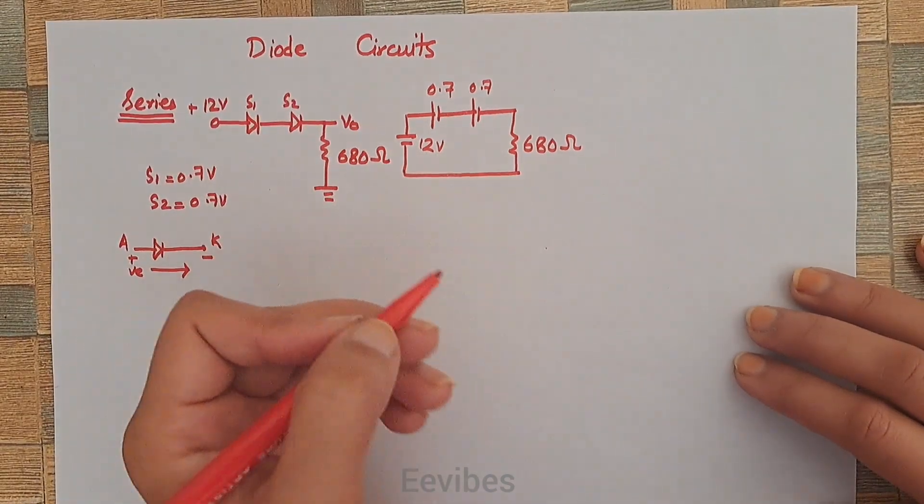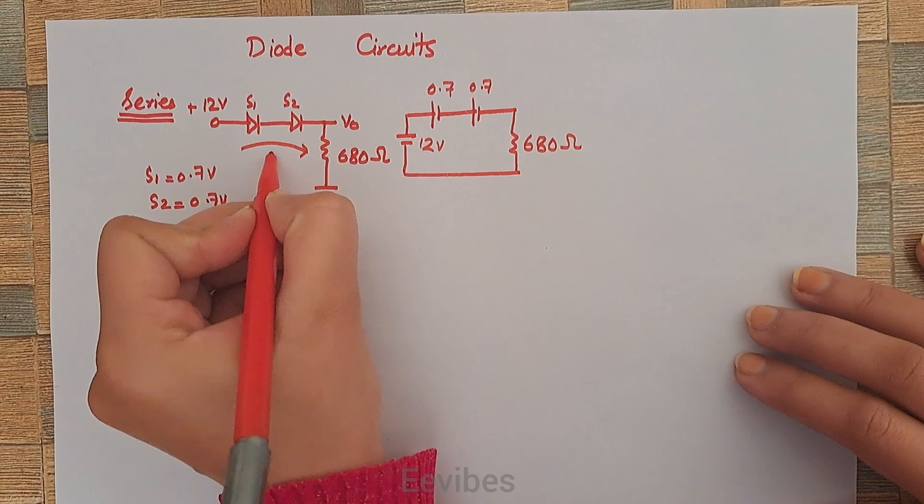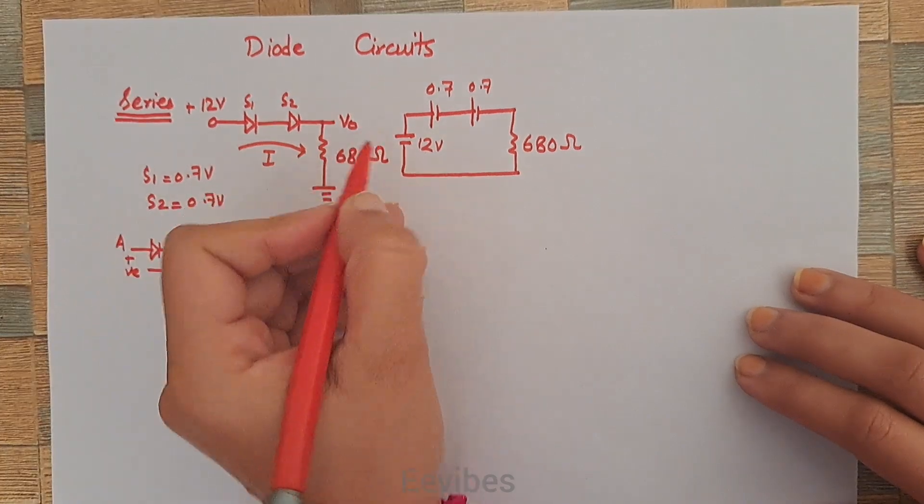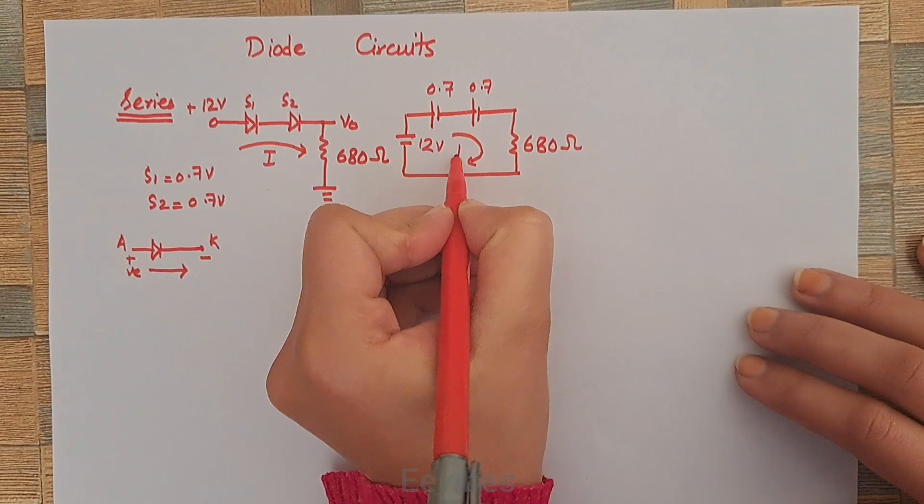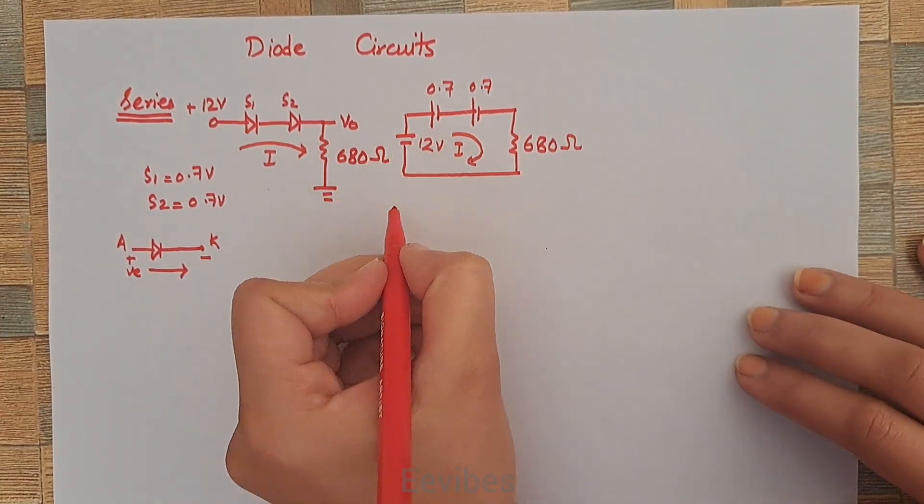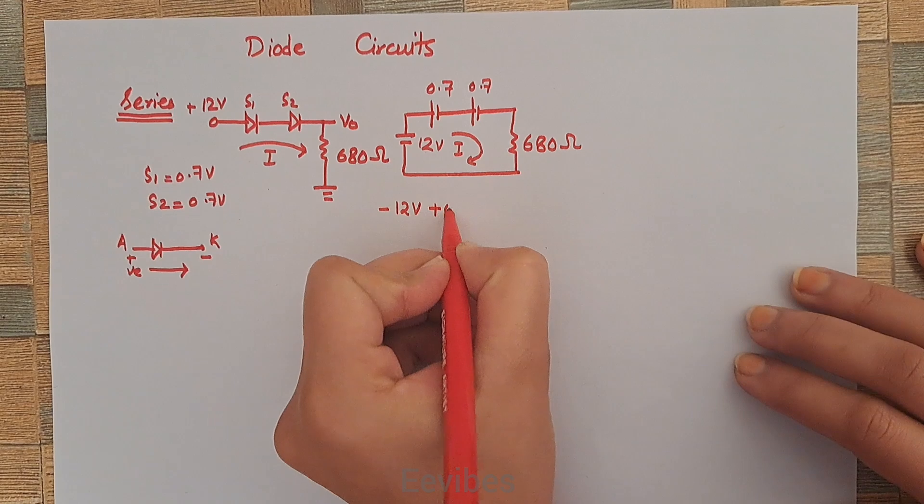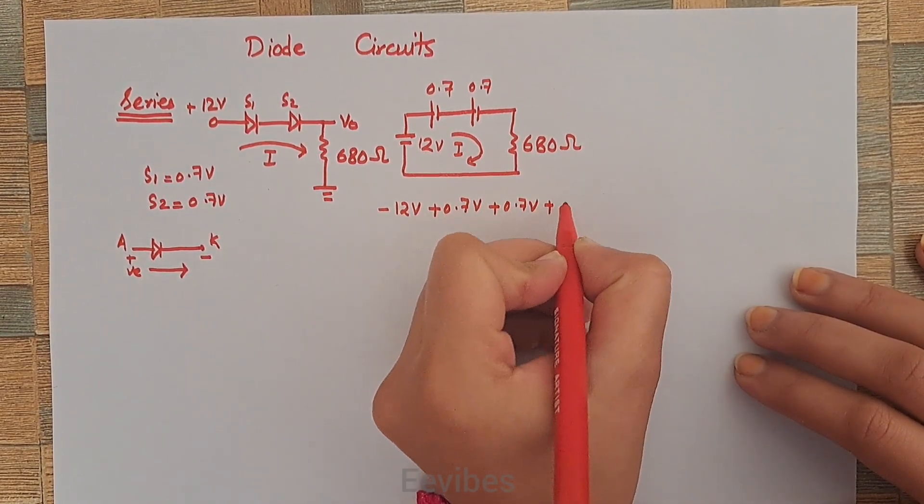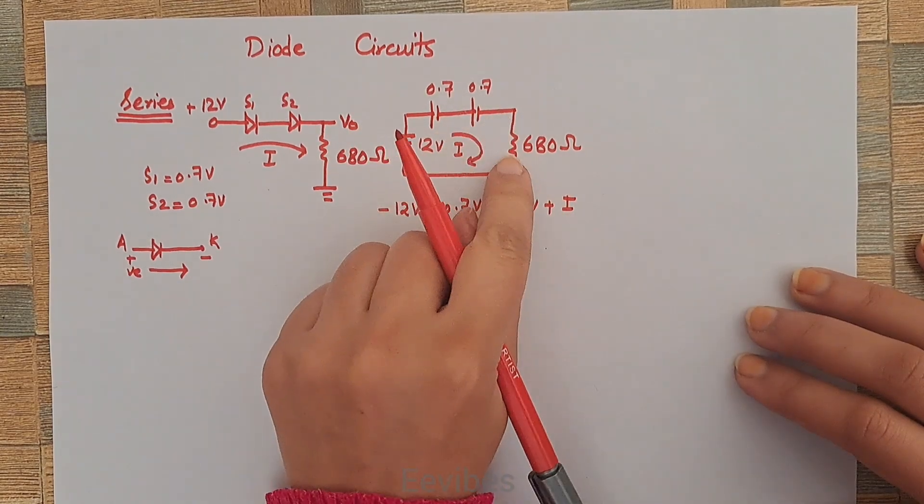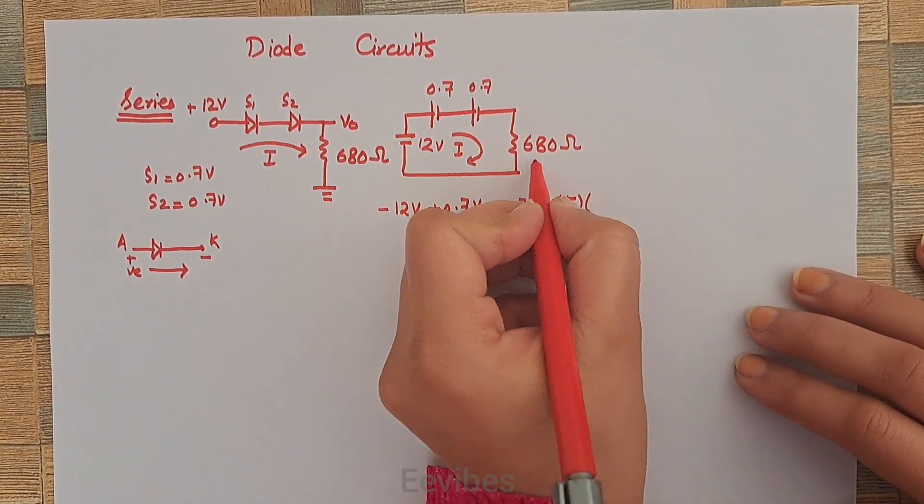Assuming we are interested in determining the value of the current and output voltage, we will simply apply KVL which says: -12V + 0.7V + 0.7V + I × 680Ω = 0.